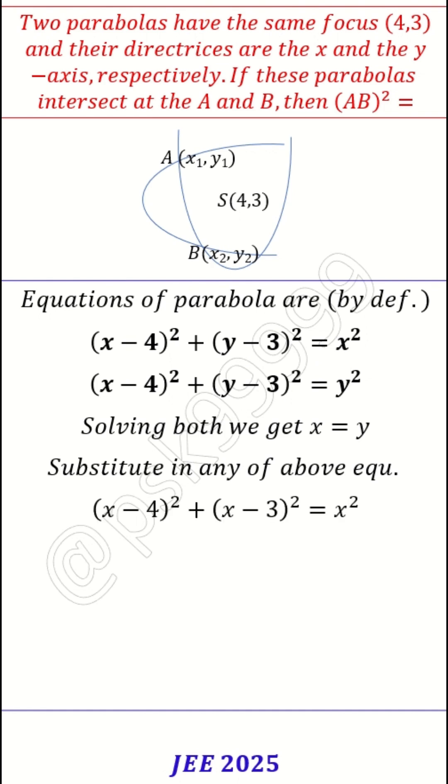I took the first one. So x minus 4 whole square plus x minus 3 whole square equal to x square. If I simplify, I get x square minus 14x plus 25 equal to 0.